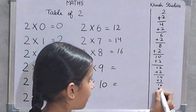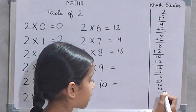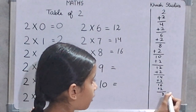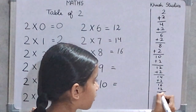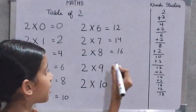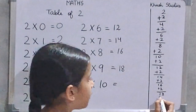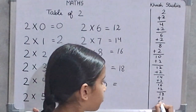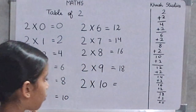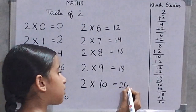Now, we will add 2 in 16. 16 plus 2 is 18. 2 nines are 18. 18 plus 2 is 20. So, 2 tens are 20.